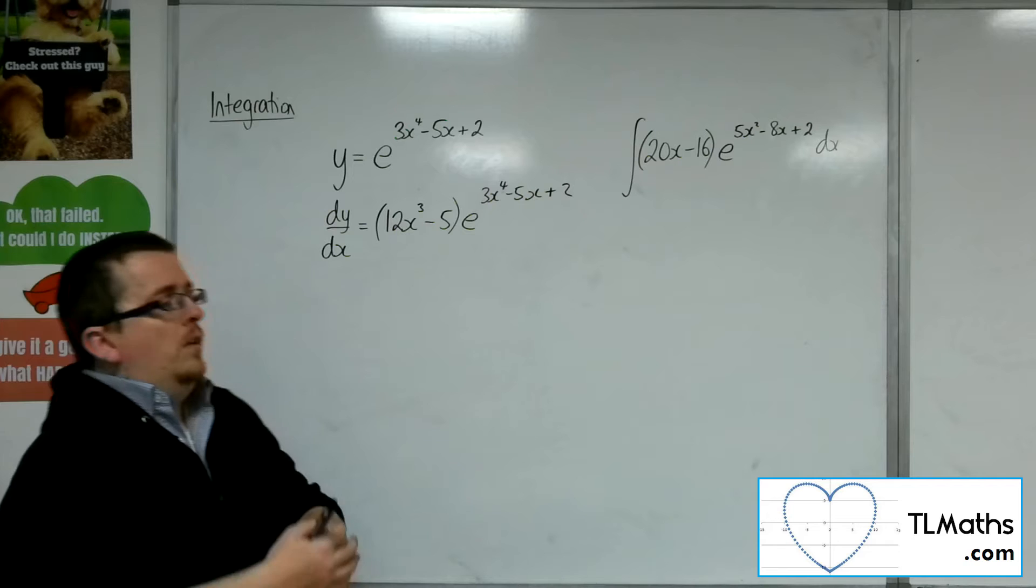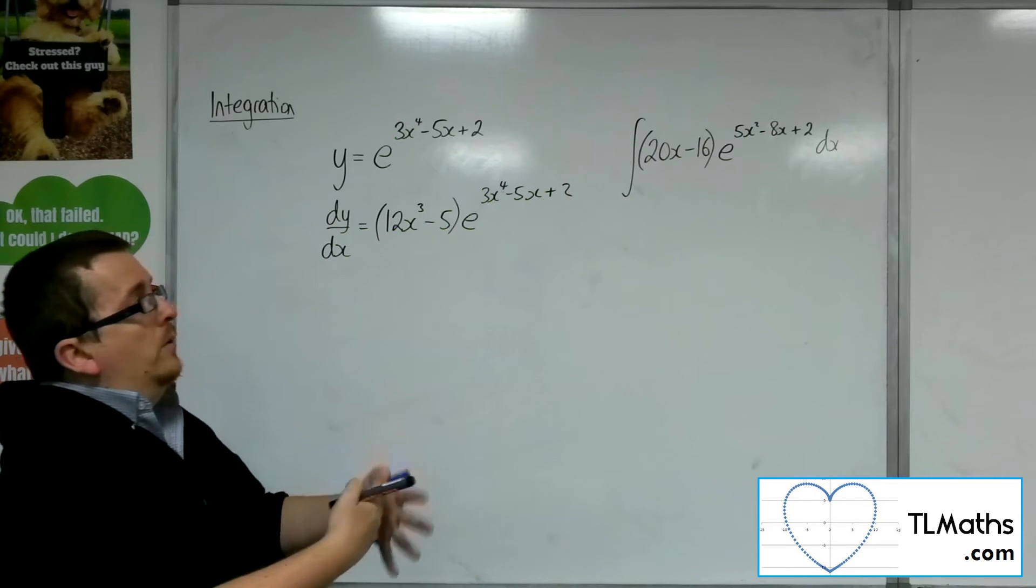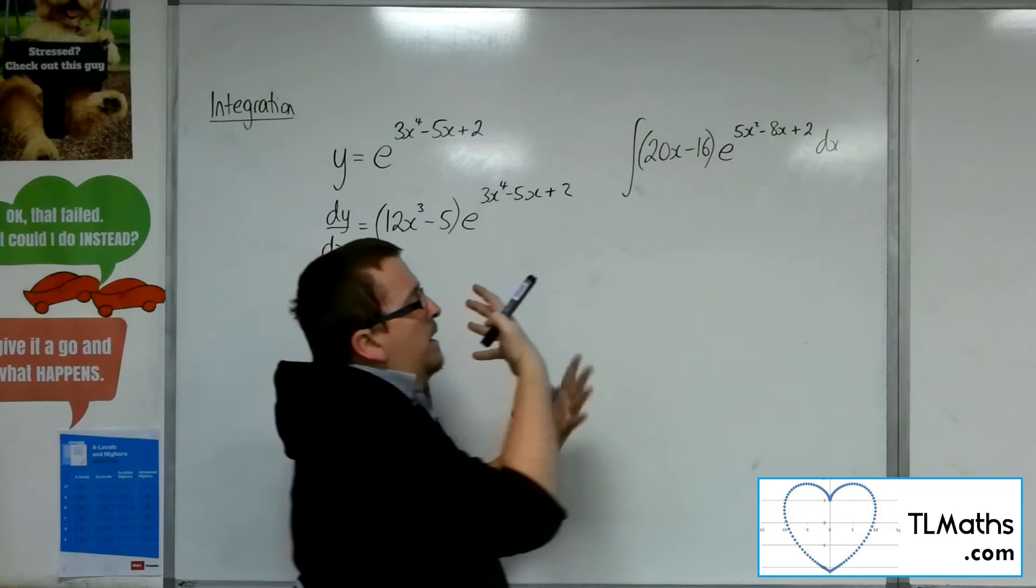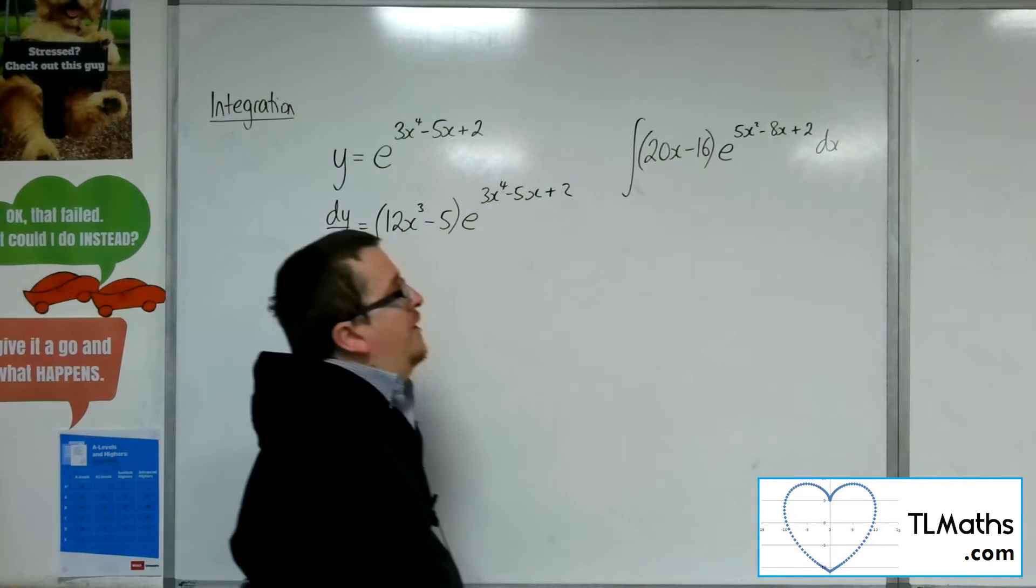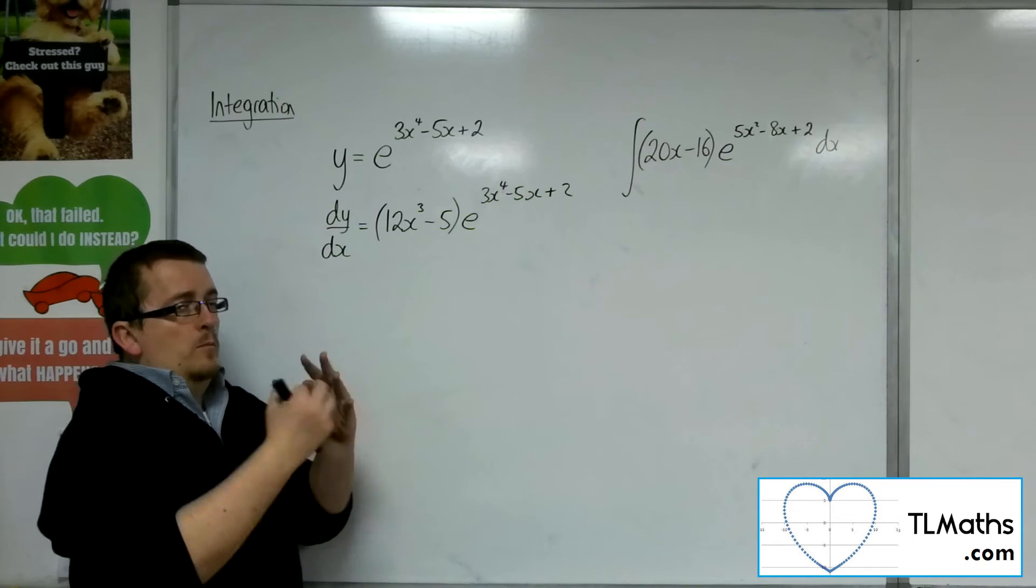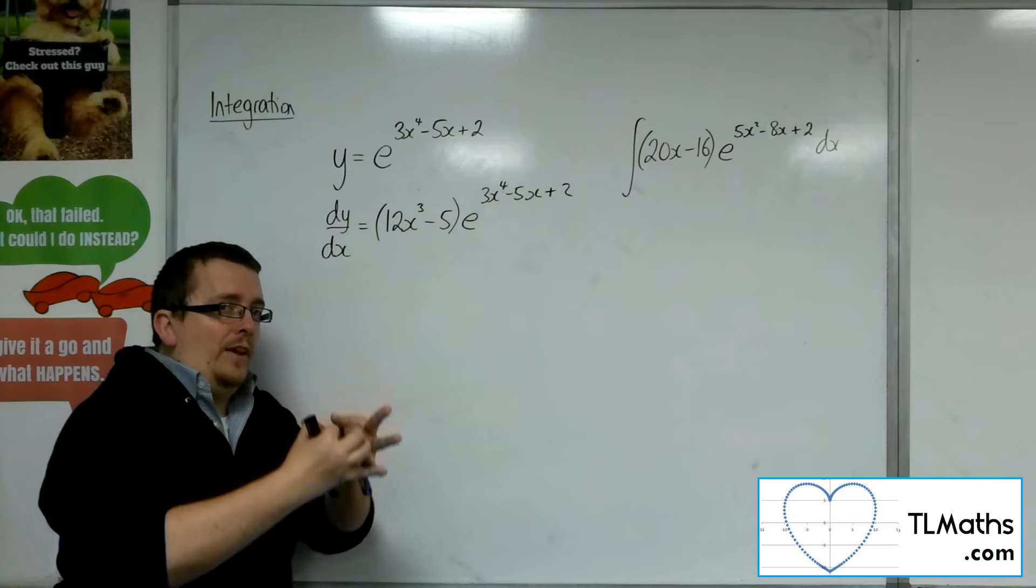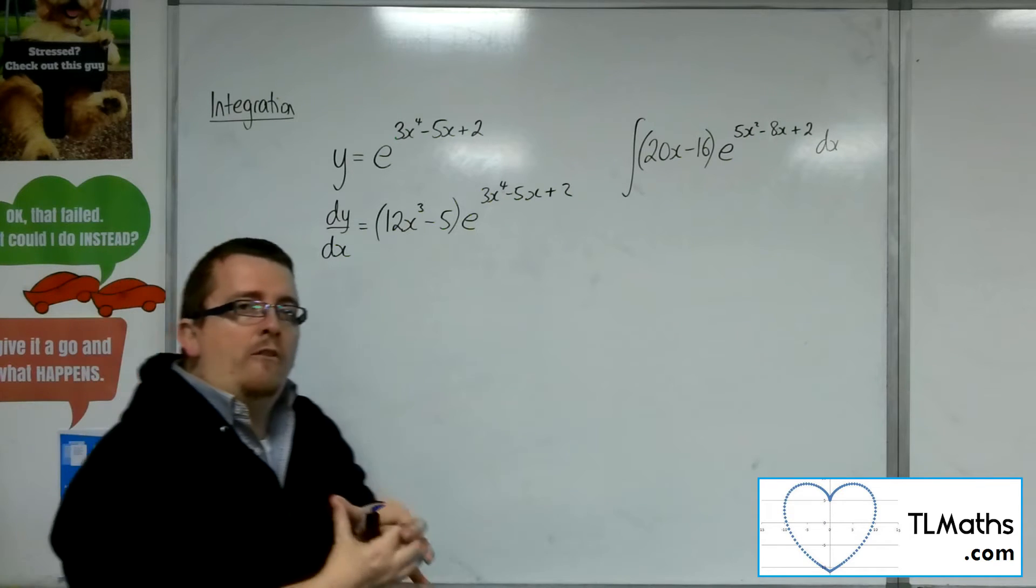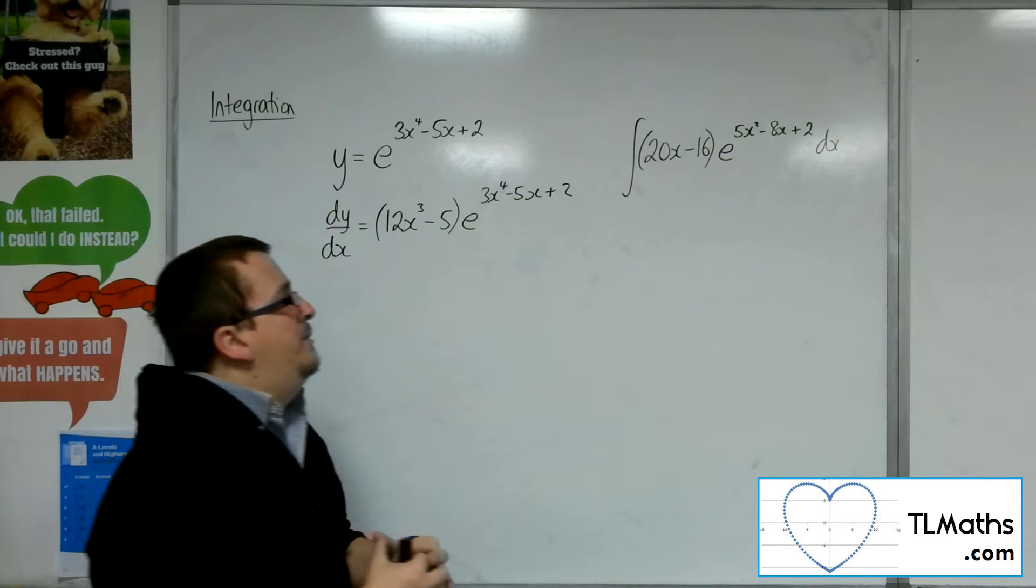So with these, I need to think about whether the coefficient of the e, that 20x minus 16, the number out the front, the expression out the front, is it a multiple of the derivative of what's inside the function? In much the same way as I've been dealing with before.